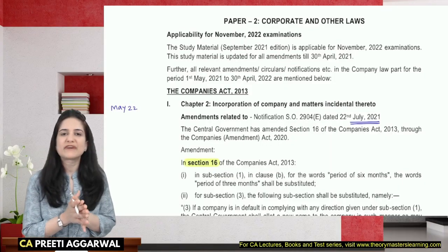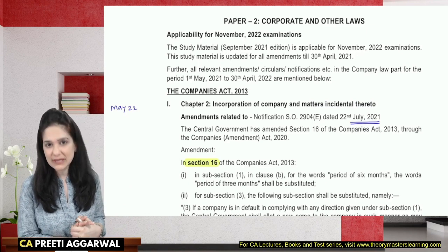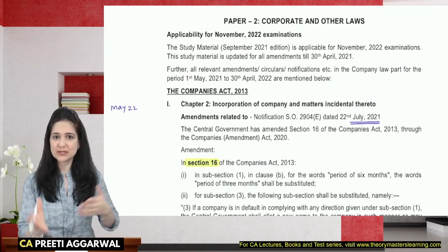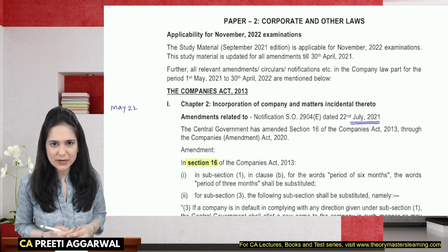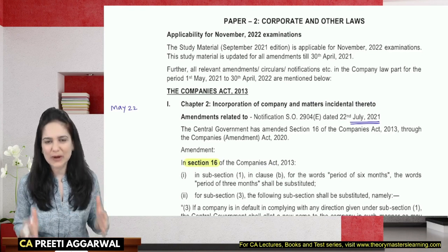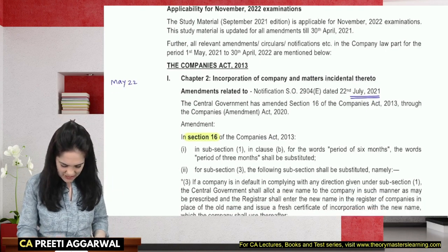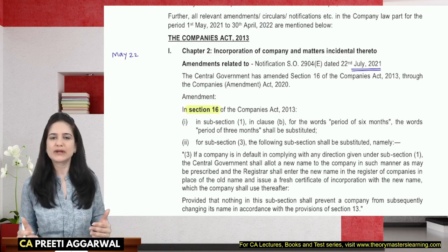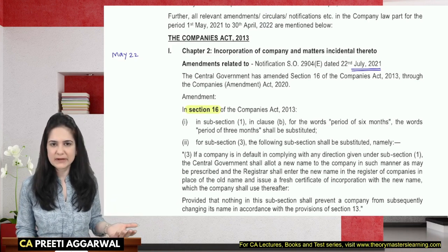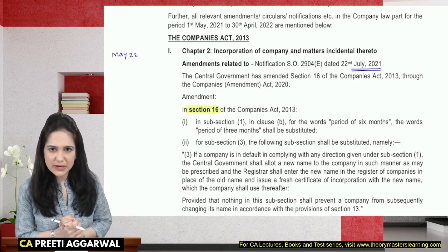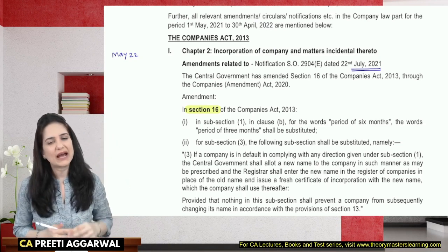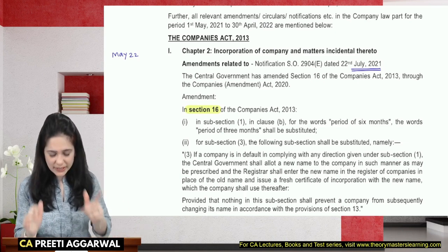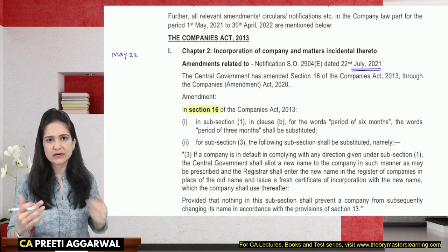Students, you will find many amendments here which were already applicable to the May 22 exam, so there is a lot of repetition this time. Maybe they have included these amendments so that if you missed the earlier attempt and are giving both groups in November 22, you have everything at one place. The first amendment itself is dated 22nd July 2021 and was applicable to May 22. I had done a detailed video on those amendments — I am leaving a link, just click the 'i' button. In this video, I am only going to discuss the amendments specifically for the November 22 attempt.